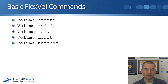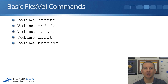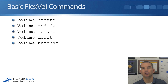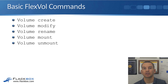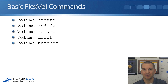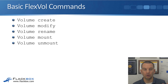To rename a volume, it's volume rename. To mount a volume in the SVM namespace, it's volume mount. And to unmount it, it's volume unmount. If you wanted to change the junction path, you would unmount it first and then remount it again. We can configure everything at the command line, and we can also do all of these tasks in System Manager as well.